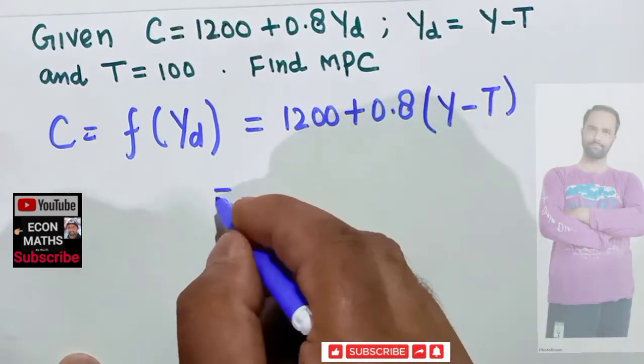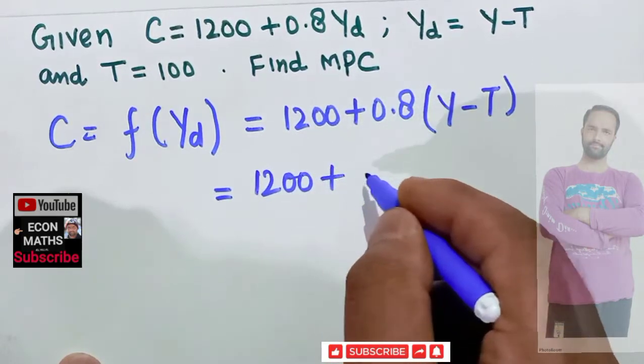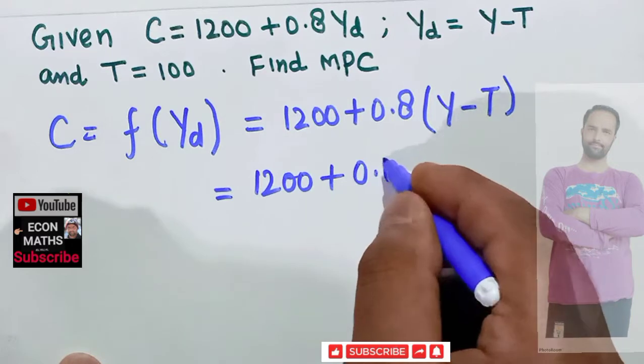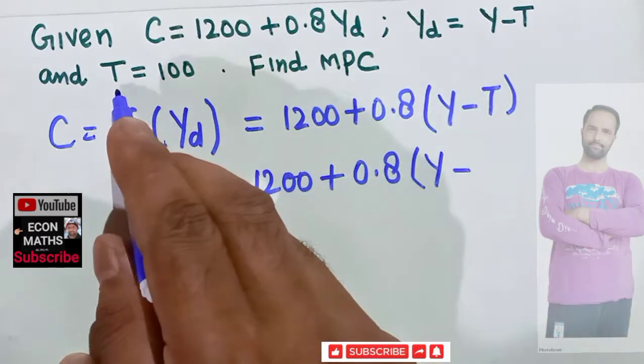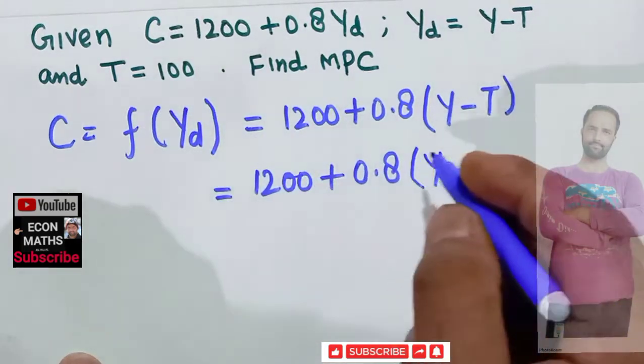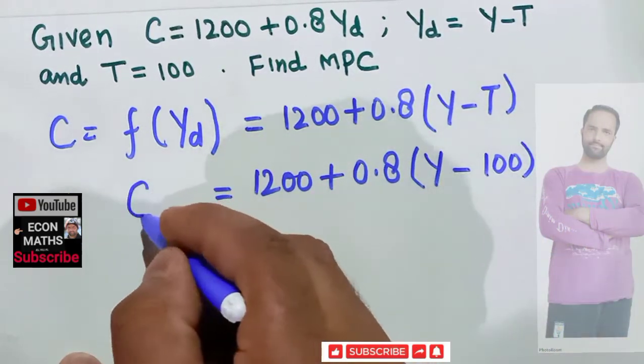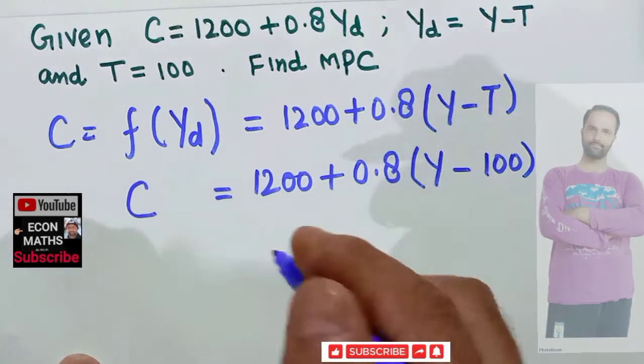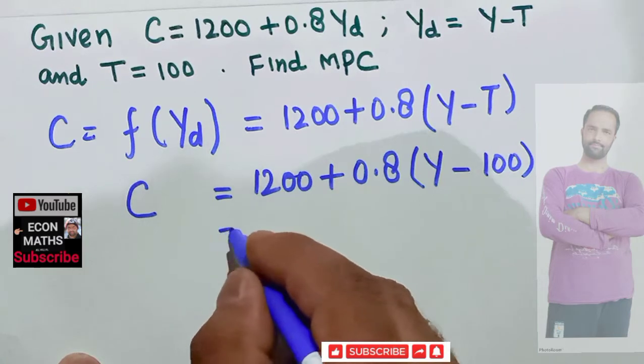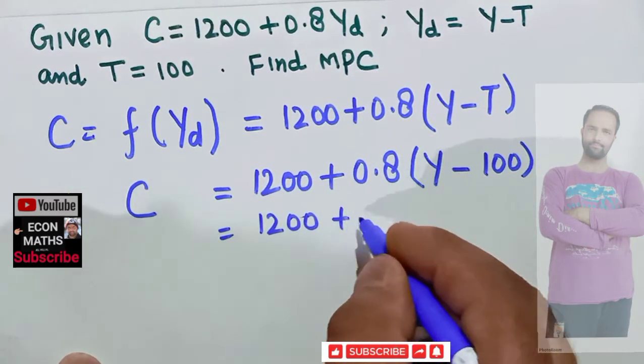The value of T, which is lump sum tax here, is 100. So this is our consumption function. Now let us write it again. So we have 1200 plus 0.8Y.